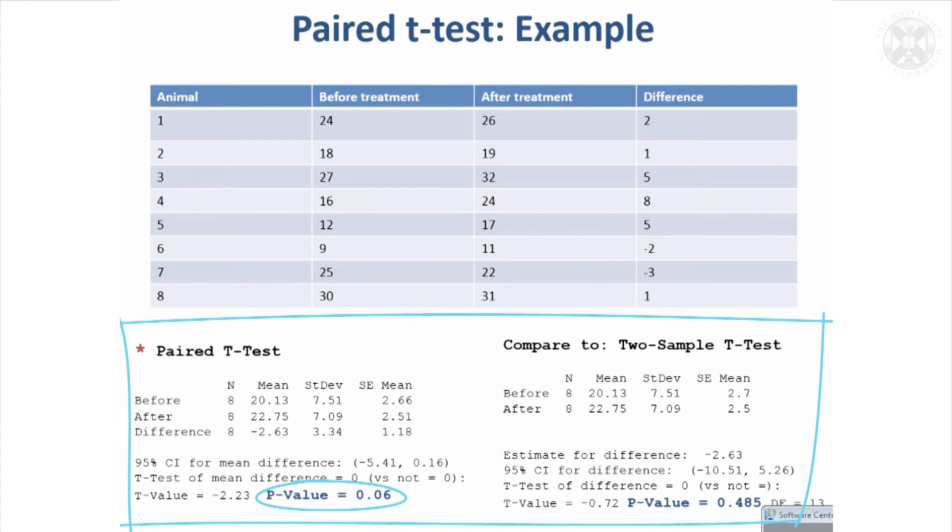Although it is kind of borderline significant, you probably wouldn't want to dismiss the fact that they might be different out of hand. You perhaps report that the p-value was 0.06, and therefore we haven't proved the result, but it was close to significance.